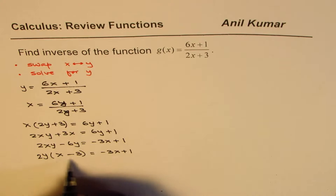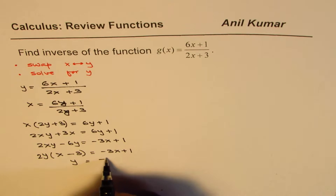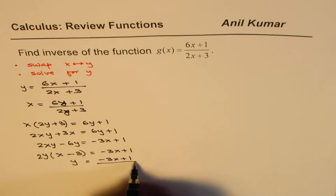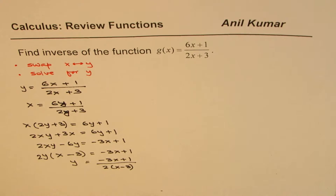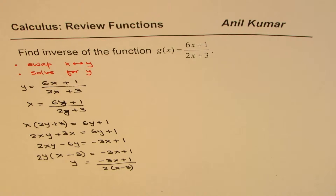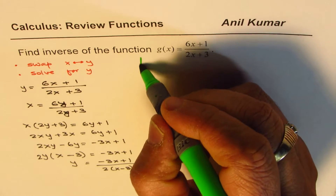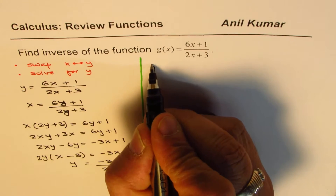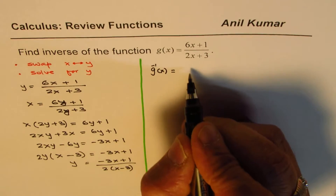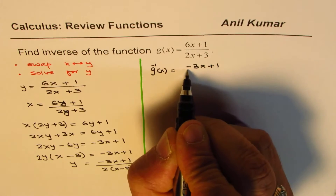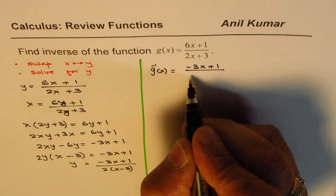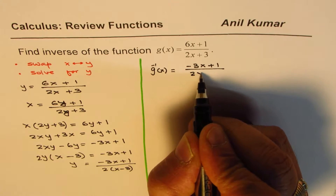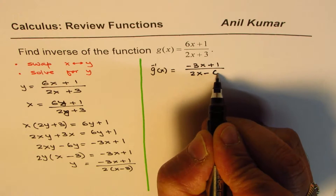Now we can get y = (−3x + 1) / (2(x − 3)). That is what we get. Now y is basically the inverse of the function. So we write: g⁻¹(x) = (−3x + 1) / (2x − 6). It is better to write 2x − 6 — I will tell you why.